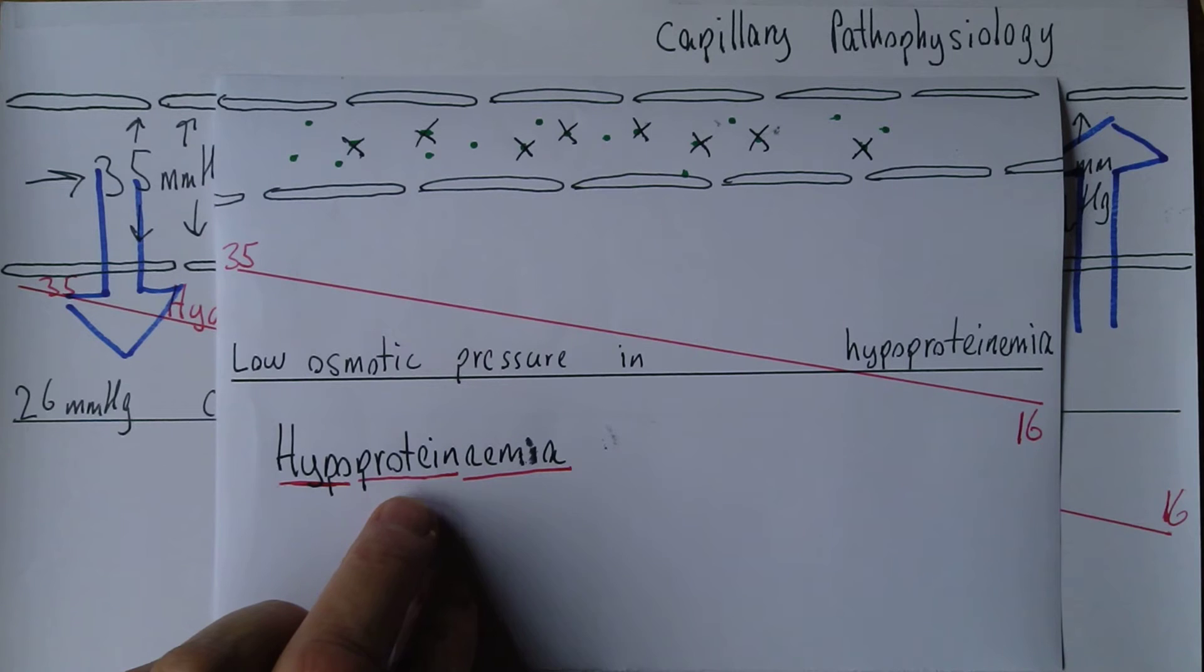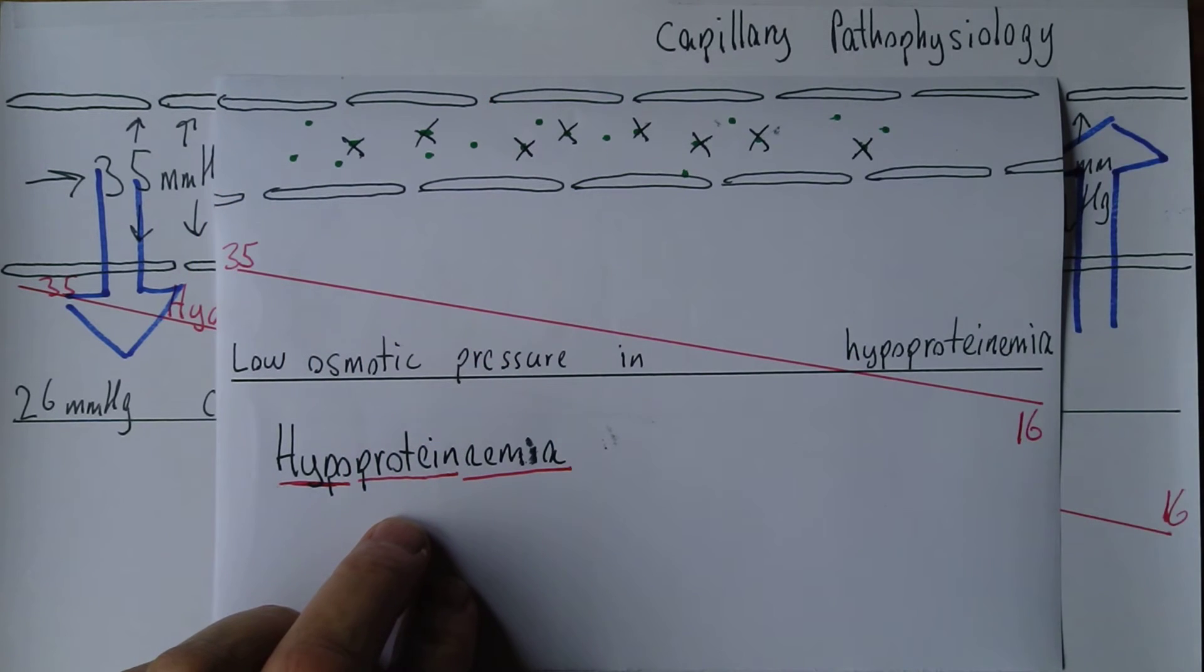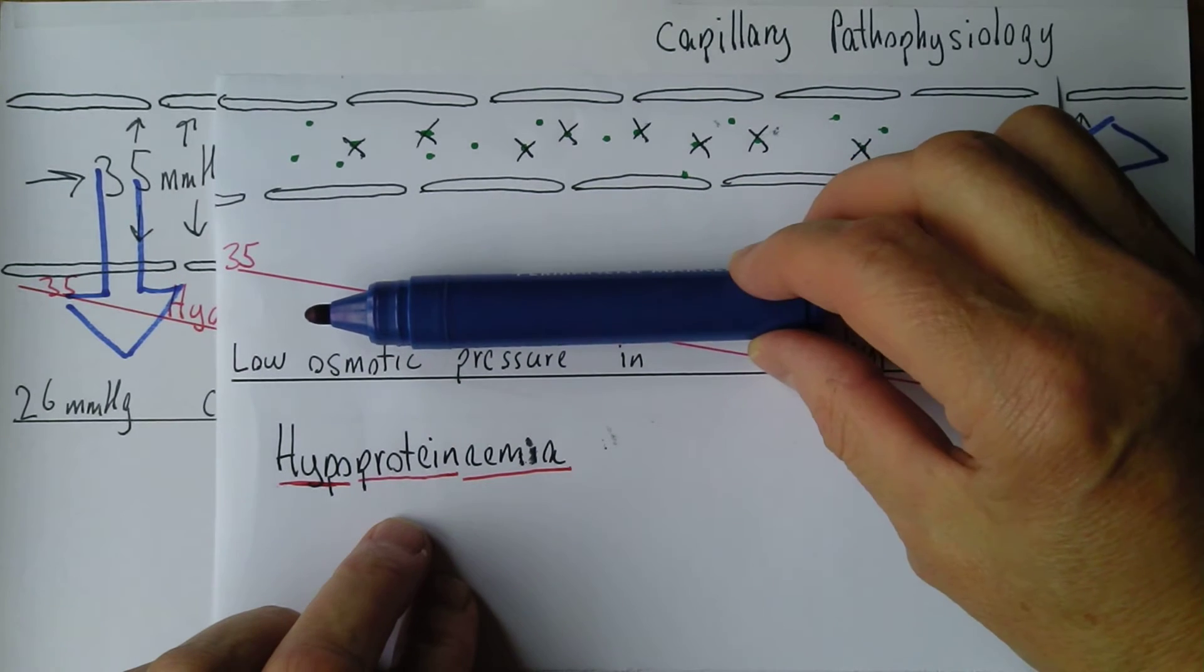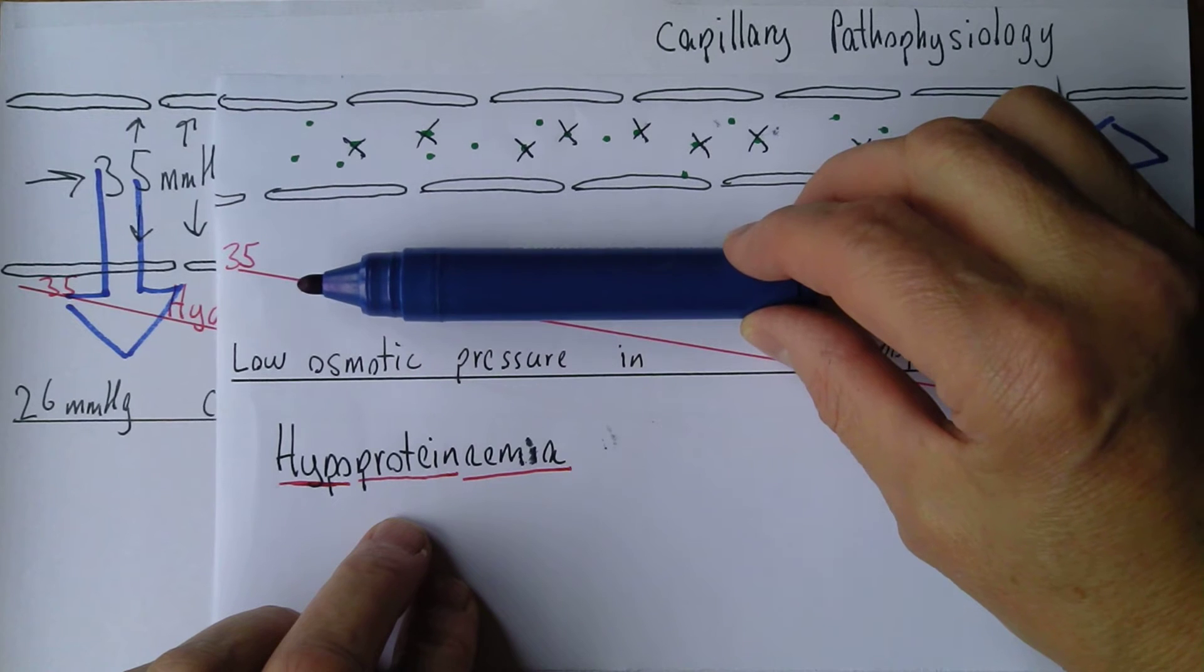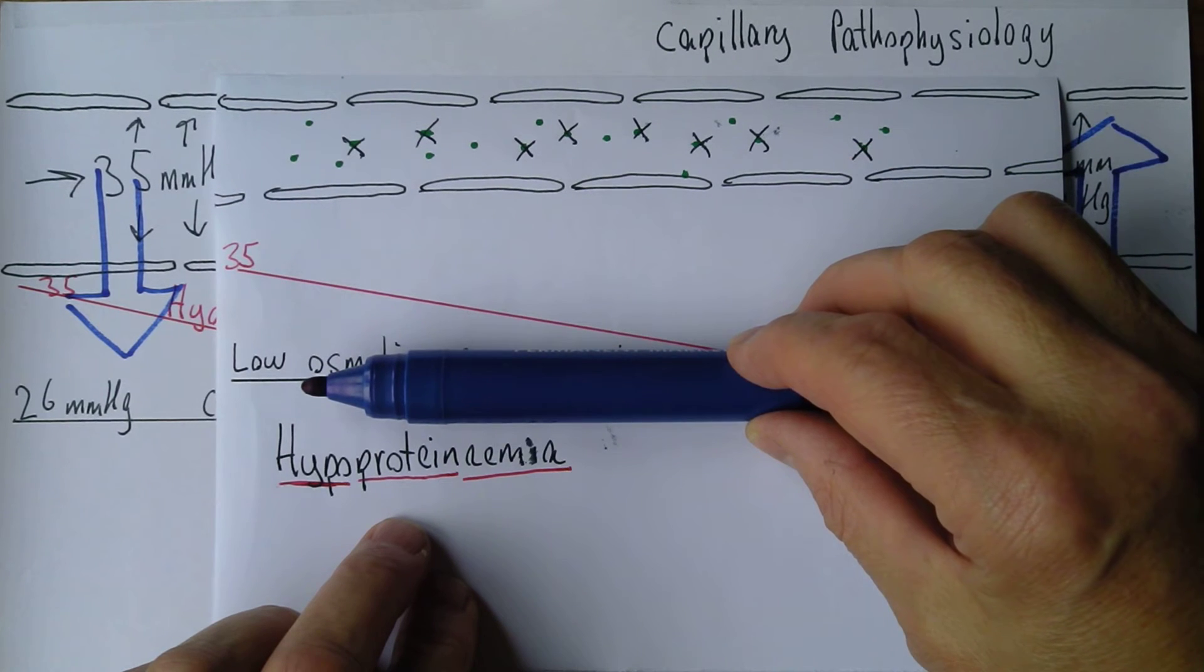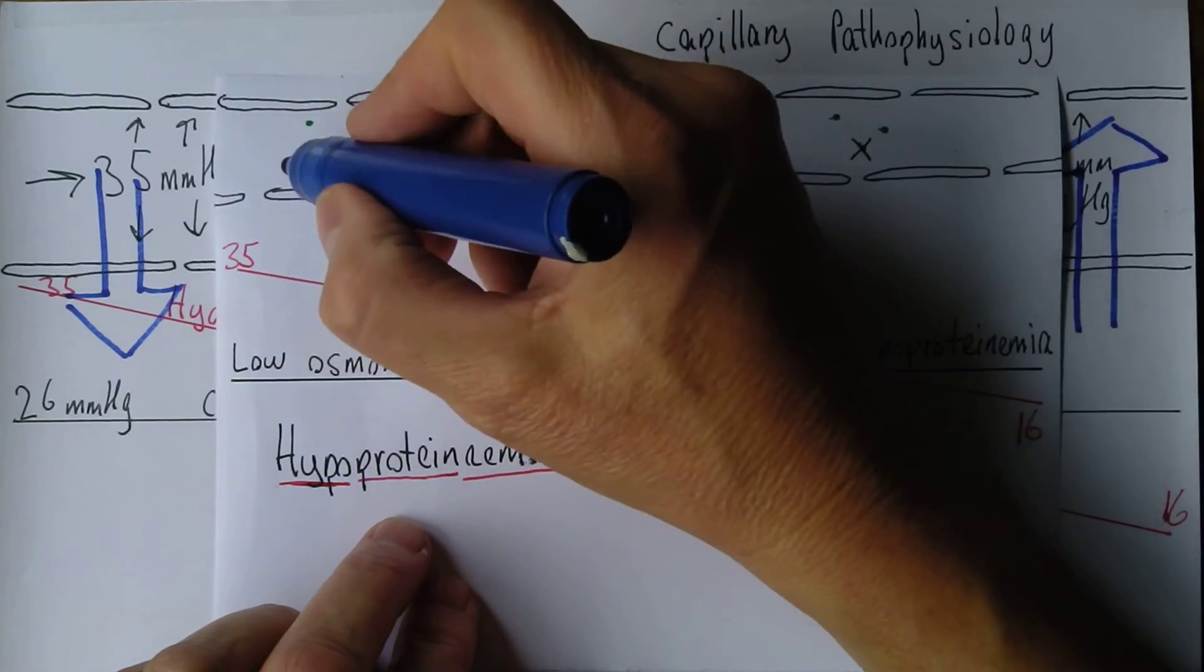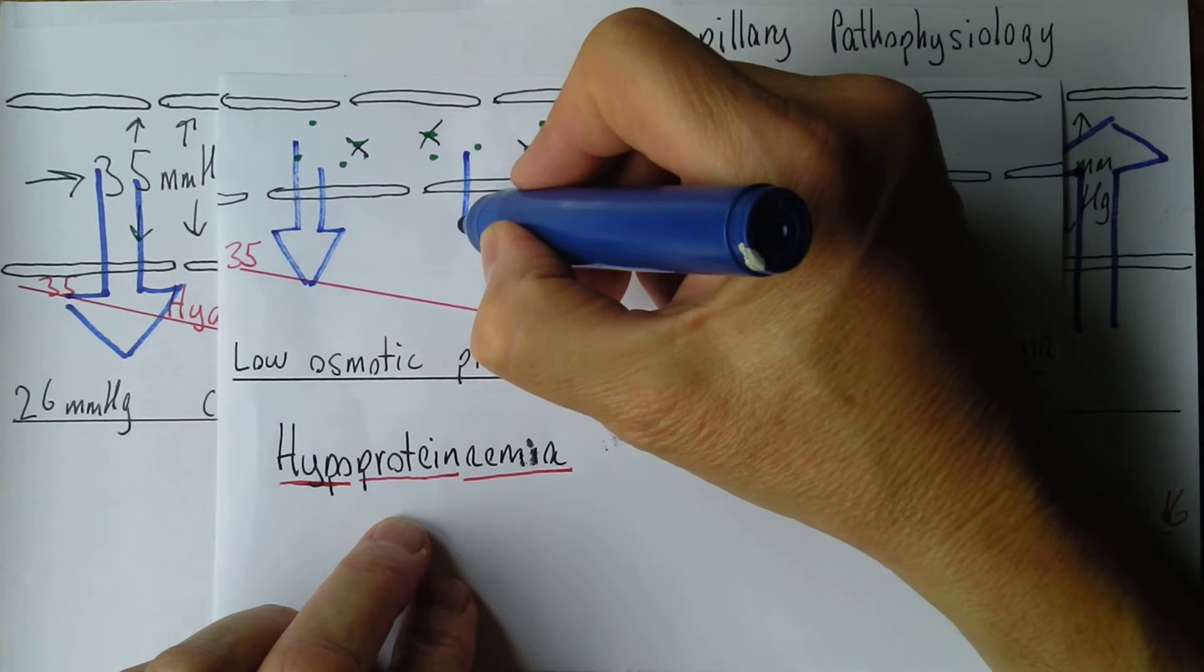Now what this means is that the pressures are the same, but now can you see the osmotic pressure has been reduced. So it should be up there, but now it's down here. So that means there's greater filtration pressures, basically all the way along here.